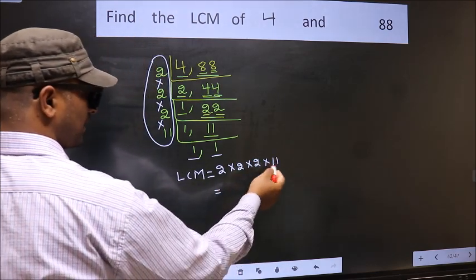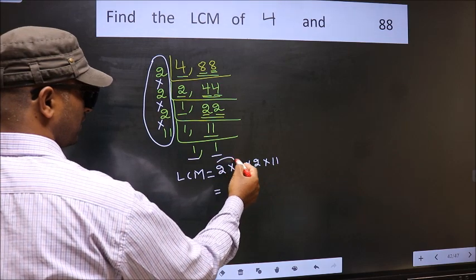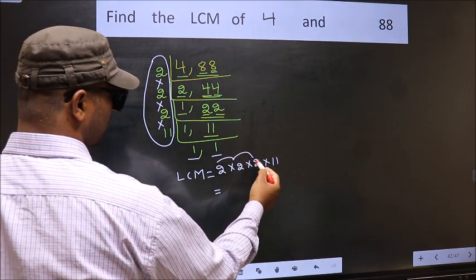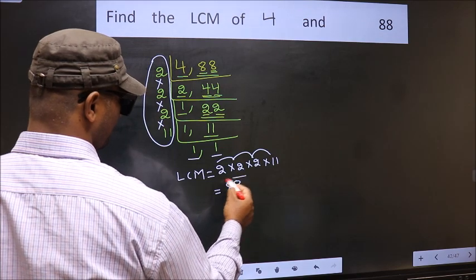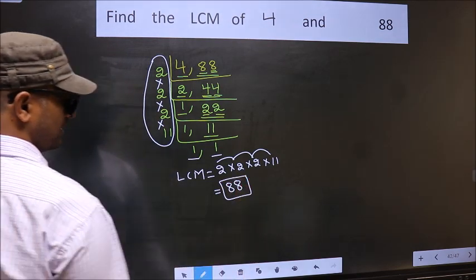So let us multiply these numbers. 2 into 2, 4. Into 2, 8. Into 11, 88. So 88 is our LCM.